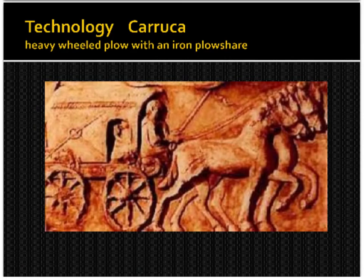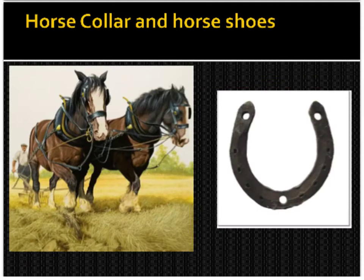This image represents technology. This is called a Karuka — a heavy-wheeled plow with an iron plowshare, and this is what revolutionized the Middle Ages. Here's another technological example: the horse collar and horseshoes. The horse collar means that when you pull the horse back, you do not choke it. The horseshoe gives the horse more stability and allows it to pull more weight. These two inventions helped increase agricultural production during the Middle Ages, allowing for more food to be produced, which in turn meant an increase in population.